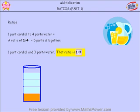It just shows four parts. One of the parts or one quarter is cordial and three of the quarters are water. A ratio of one to three.